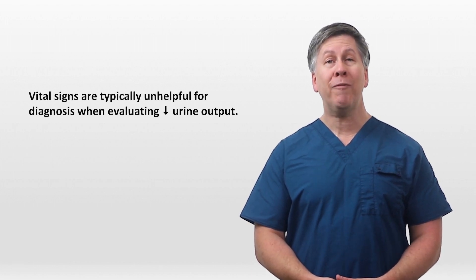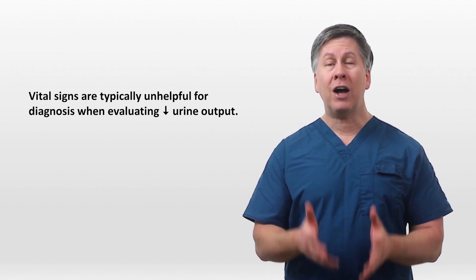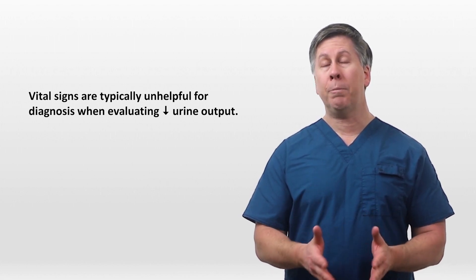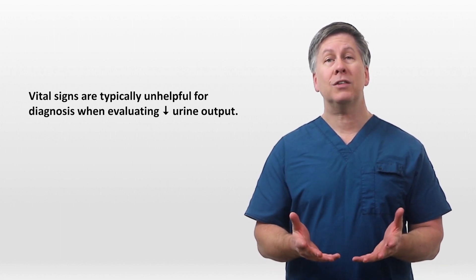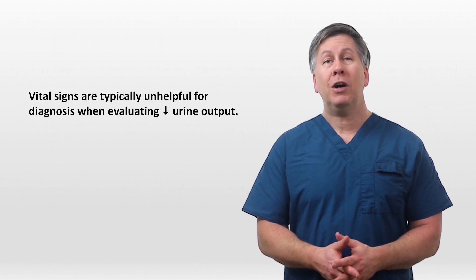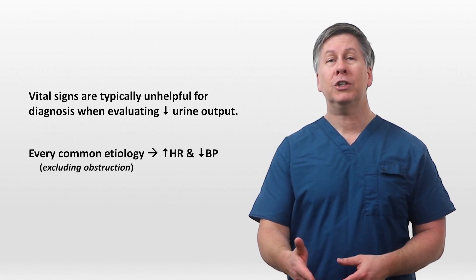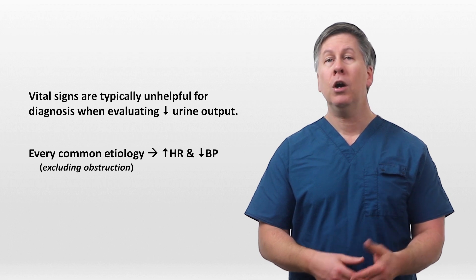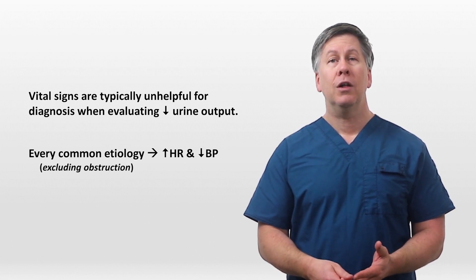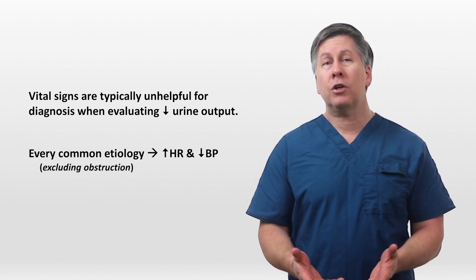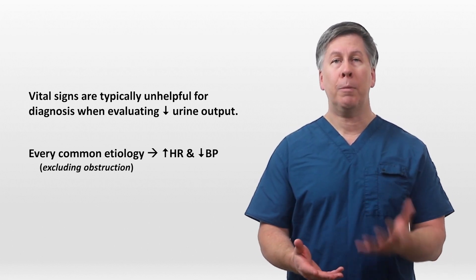Another common mistake during this evaluation is relying too heavily on vital signs. Vitals are typically unhelpful for diagnosis when evaluating low urine output — because, excluding obstruction, every other common etiology such as hypovolemia, heart failure, or sepsis all commonly cause tachycardia and low blood pressure.